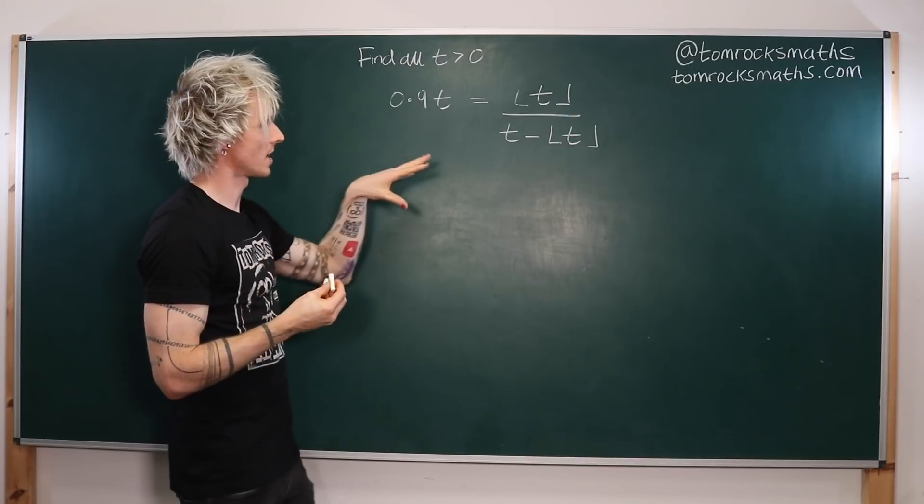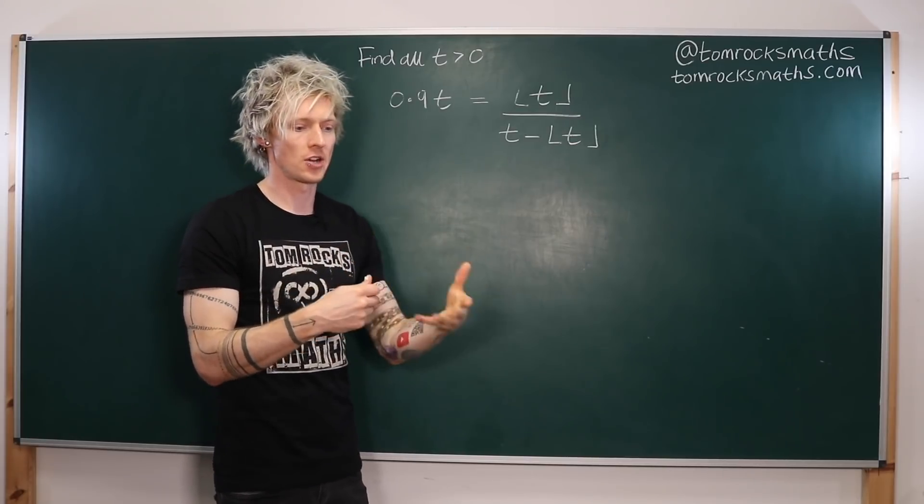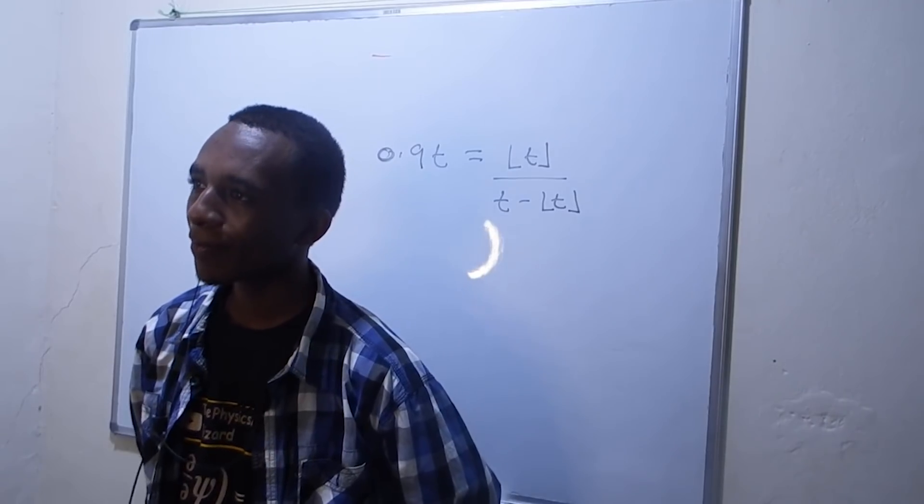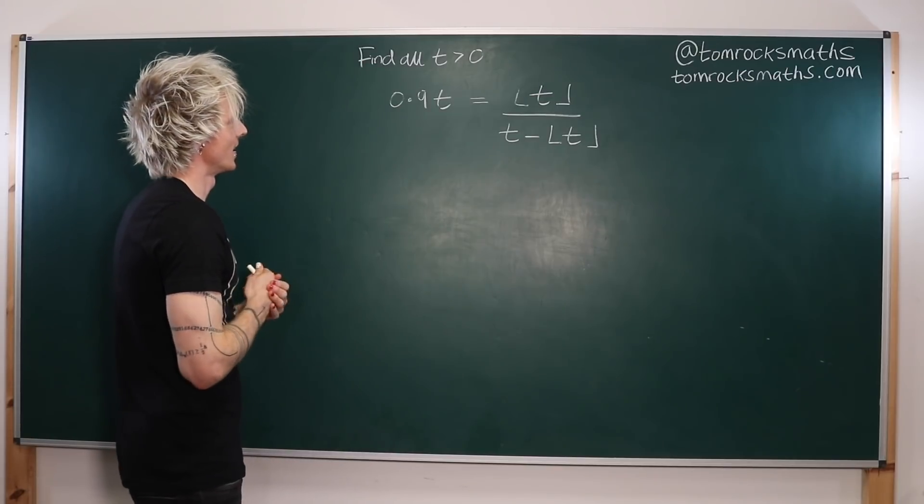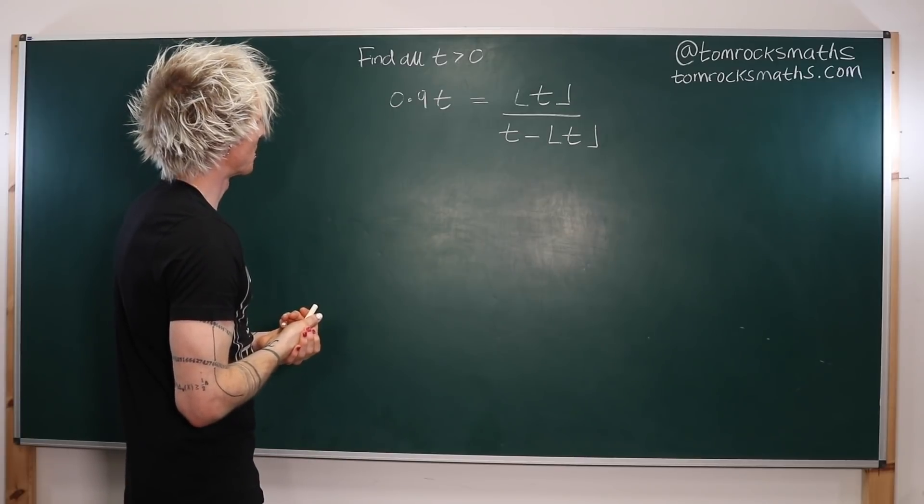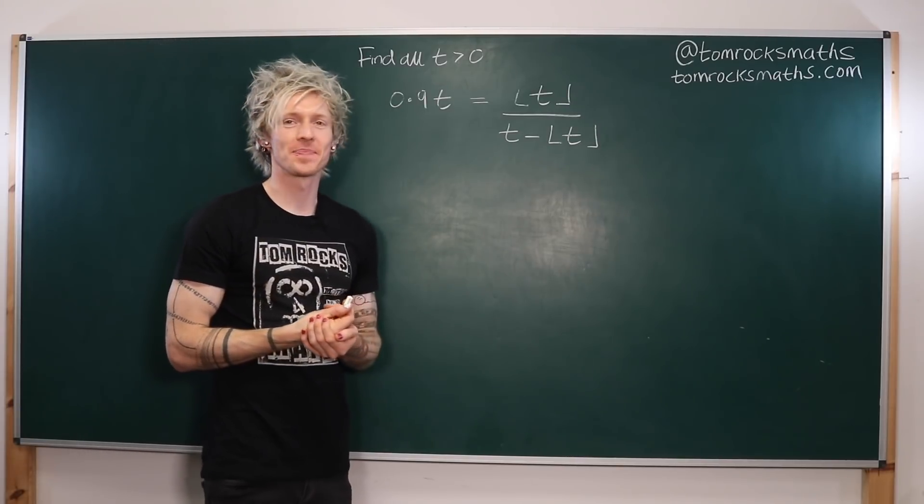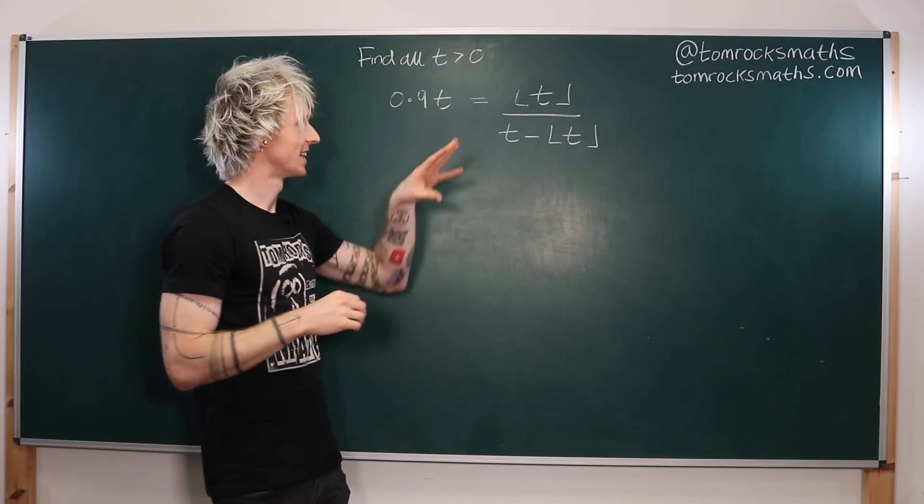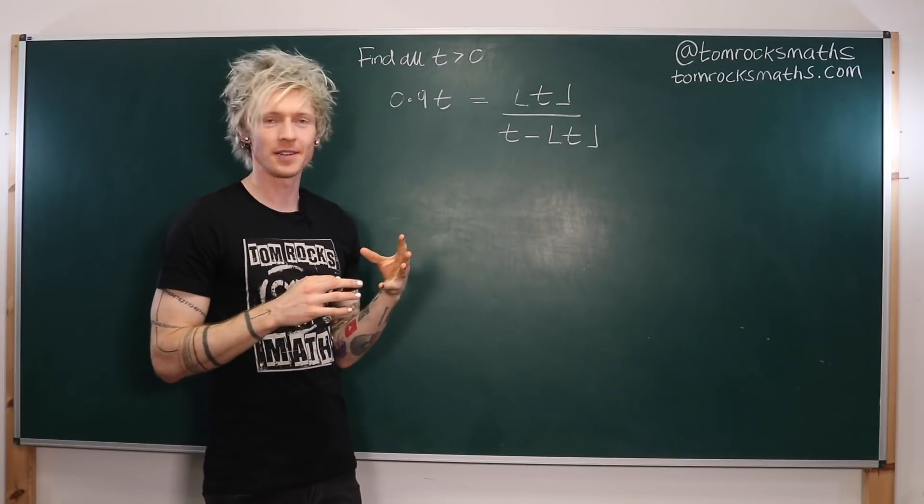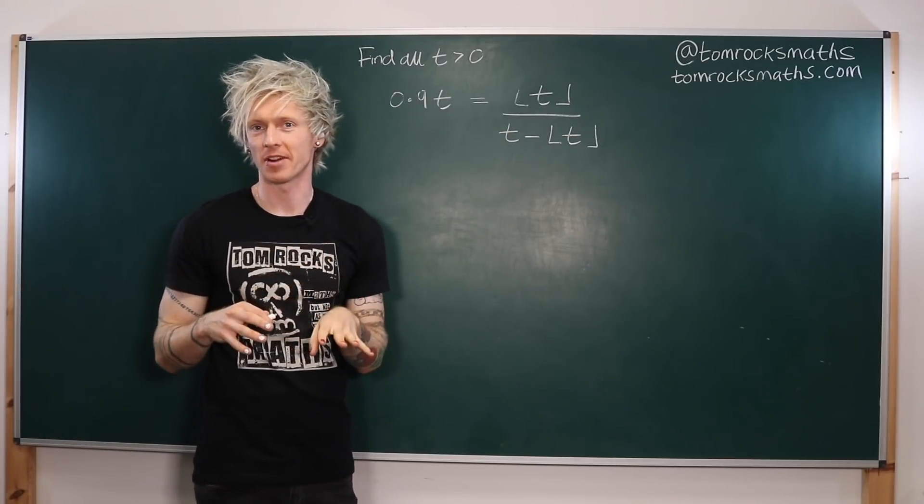Okay, and am I correct in thinking that the floor function here means the largest integer less than t? Okay. Right. All right, okay, tough one. So I'm solving this for all possible t. Okay, so as with most expressions where you have a function on the denominator, my first instinct here is to make sure that the denominator isn't 0.